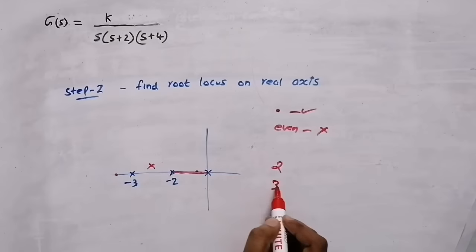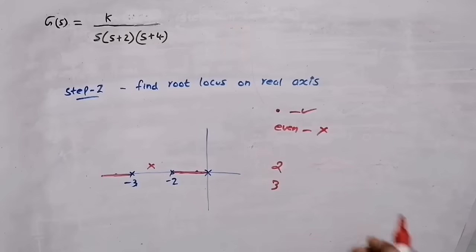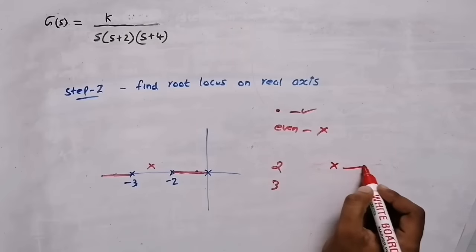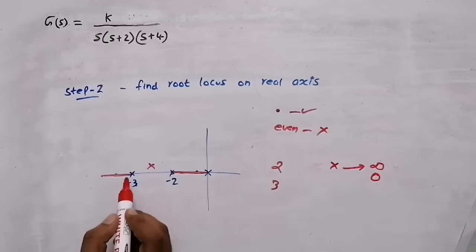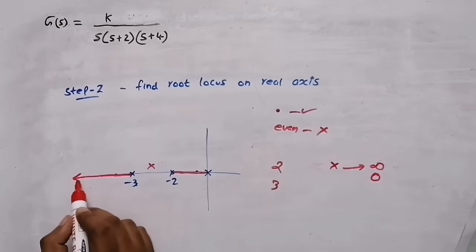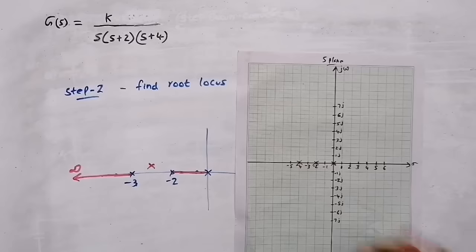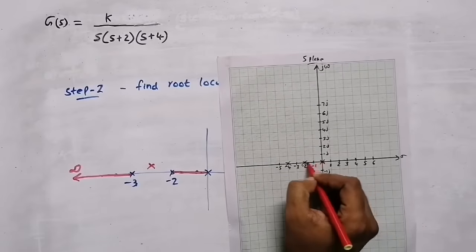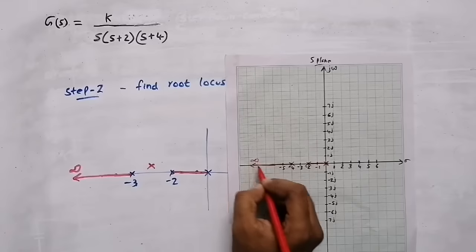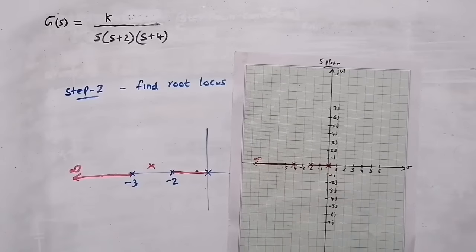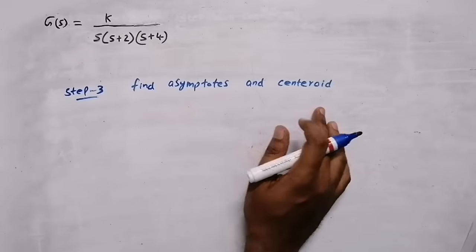Testing a point further left of -4 gives three poles to the right — odd — so root locus exists there. Root locus always starts from poles and either ends at zeros or goes to infinity. Since there are no zeros, all branches go to infinity. So root locus exists between 0 and -2, between -2 and -4, and from -4 to negative infinity.